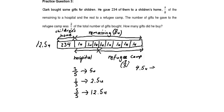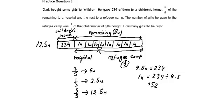12.5 units — can I find one unit? Yes. So I use 234 divided by 4.5. Using a calculator: 234 divided by 4.5 gives you 52. So one unit represents 52 gifts.